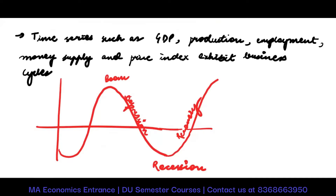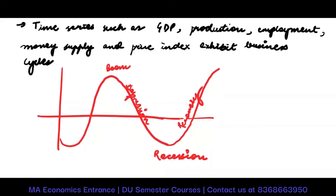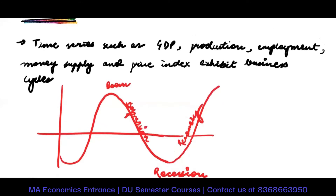During boom, GDP will be high, production would be high, employment would be more, money supply would be high, and inflation would be high — so everything is going to be high. During recession, GDP will be low, production will be low, and money supply would have to be somehow increased in the long run to go towards recovery — but prices would be low. So all these macroeconomic variables like GDP, production, employment, and money supply predominantly work on the background of these business cycles.